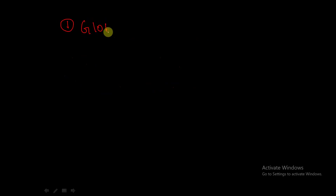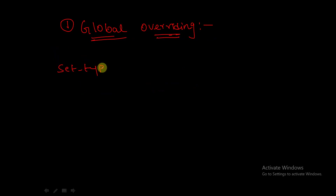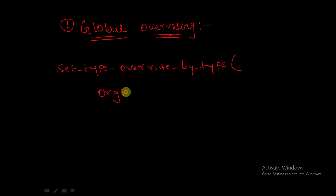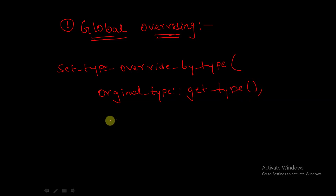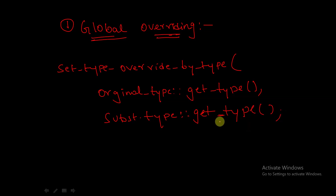The syntax for global override is: set_type_override_by_type(original_type::get_type(), substitute_type::get_type(), bit replace = 1). In the arguments, we mention the original type with get_type(), then the substitute type with get_type(), followed by bit replace equal to 1. Just follow this syntax without worrying about each argument specification in detail.